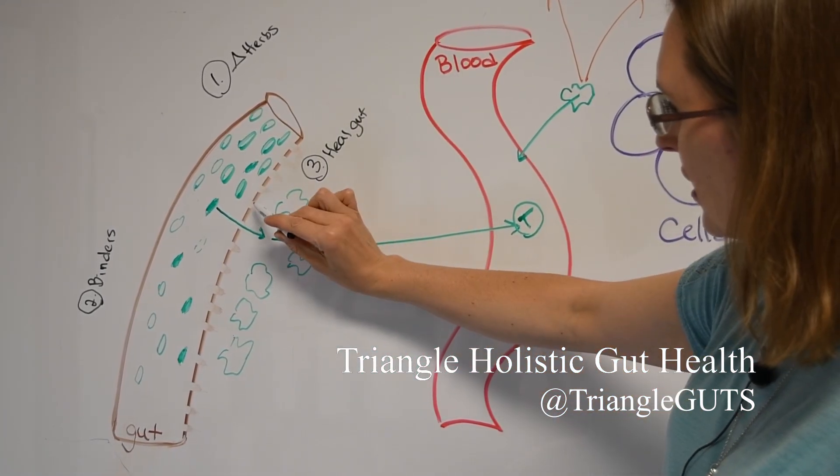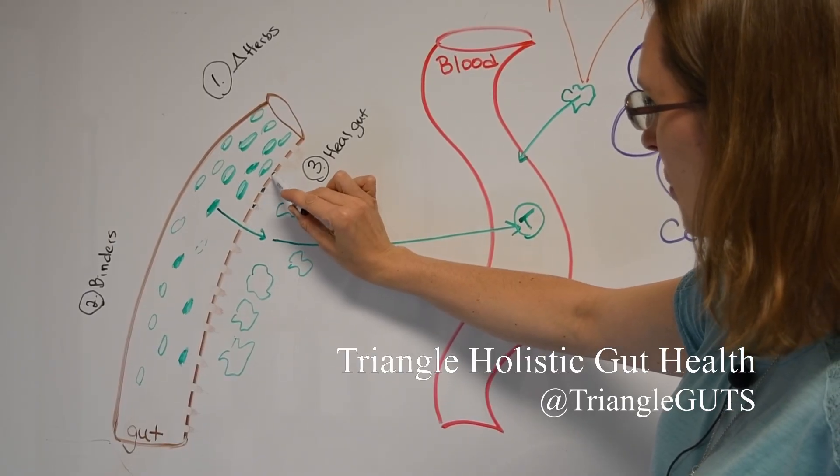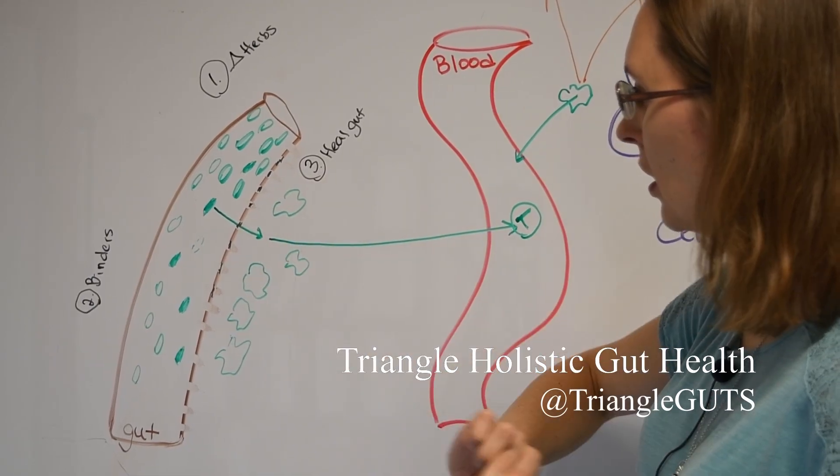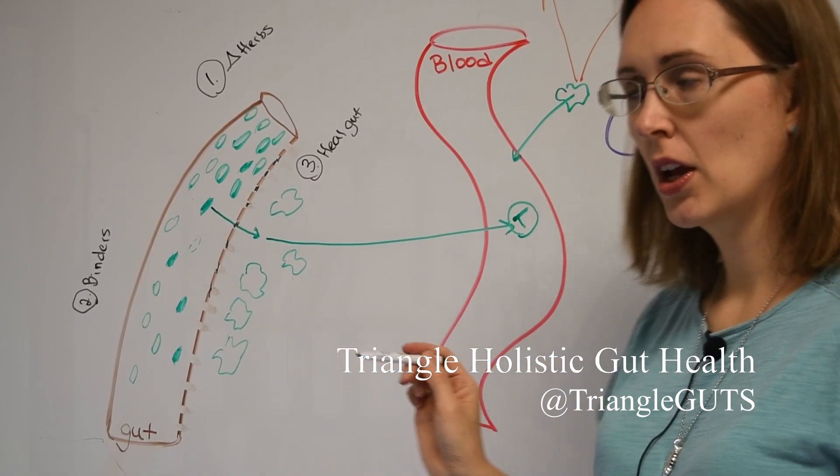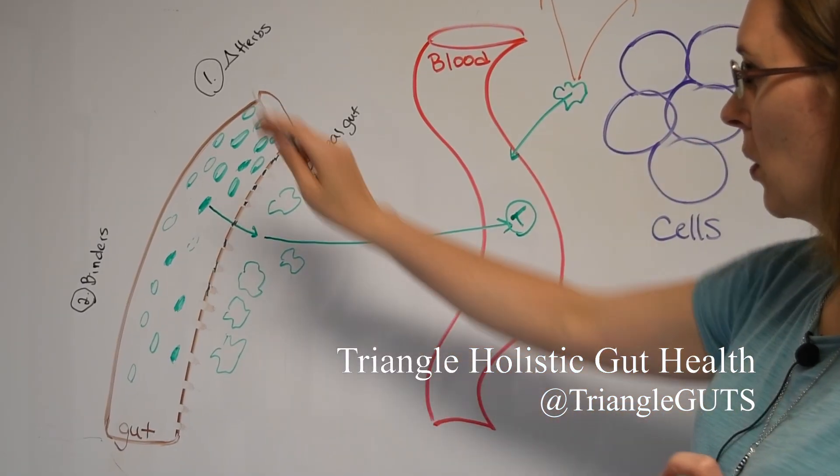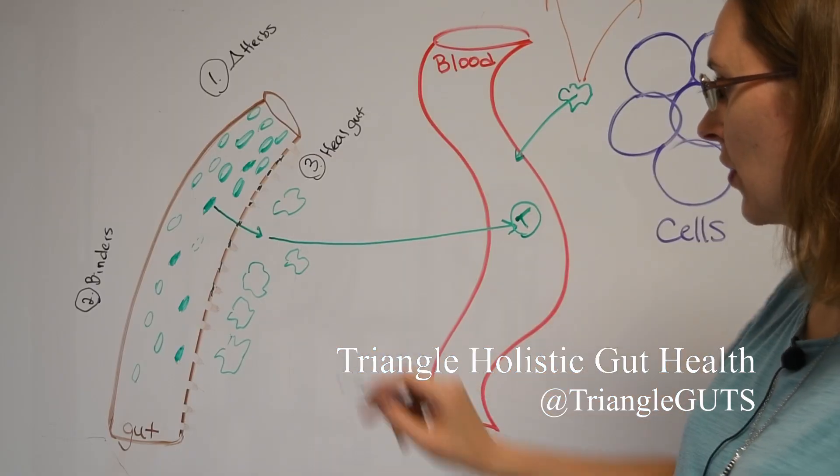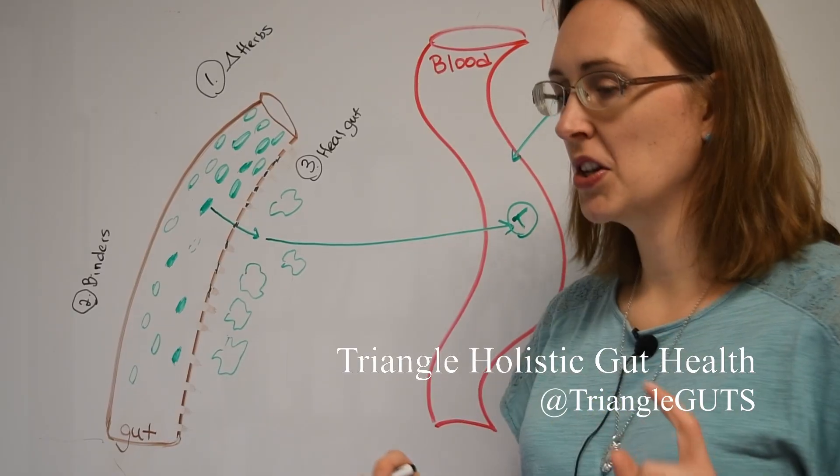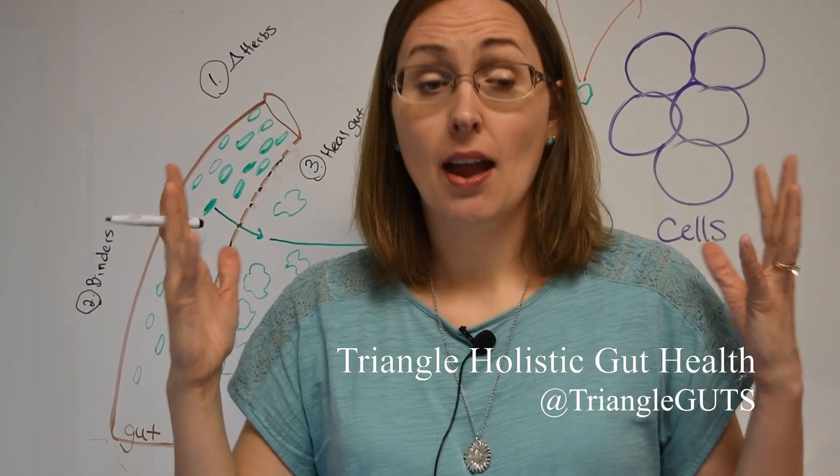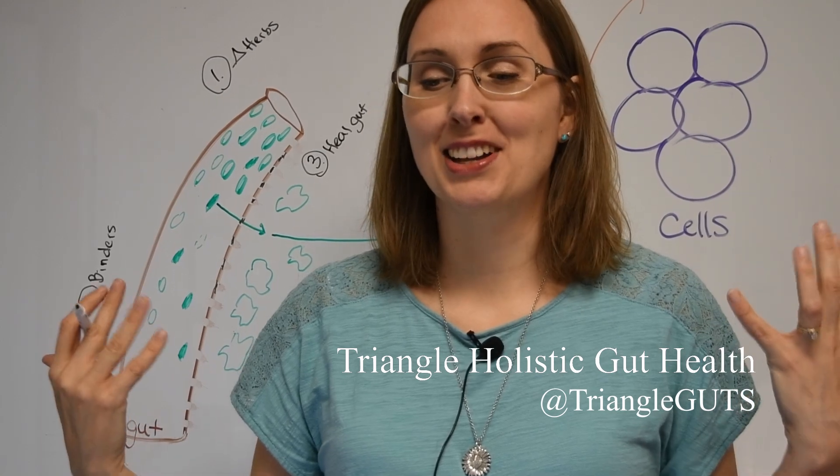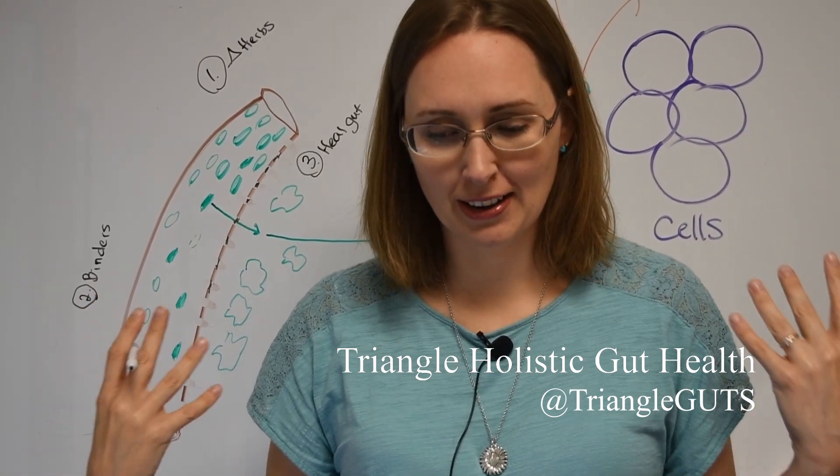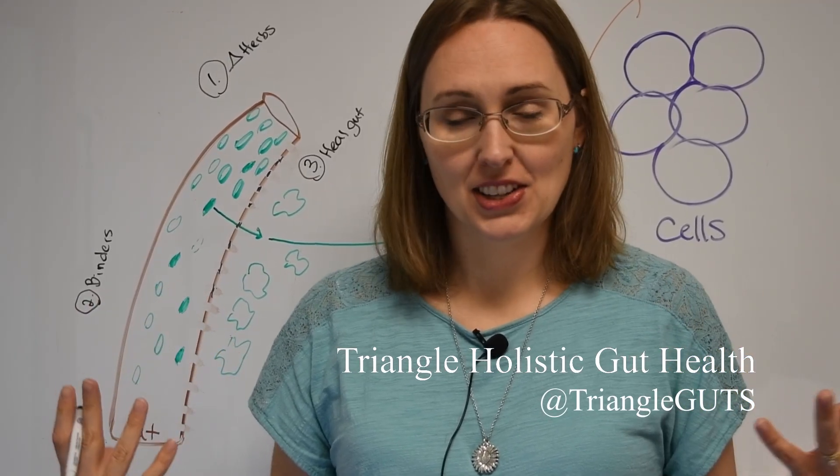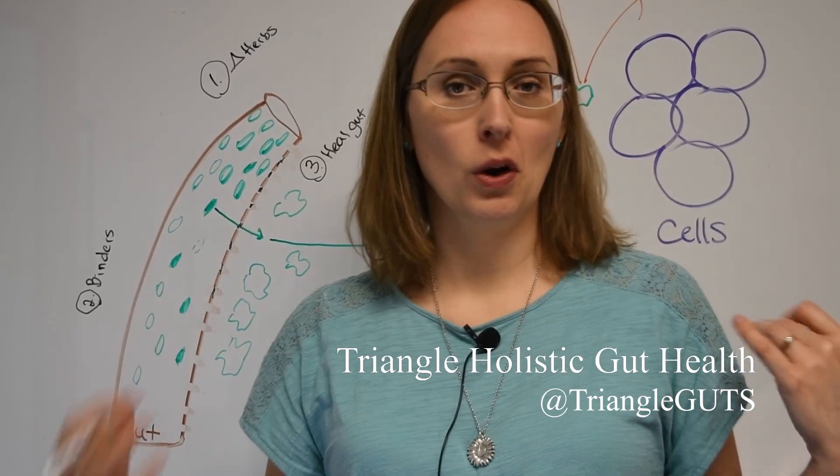So if you heal the lining of the gut and close up these little holes, then the bacterial toxins should not be able to get through. Bada bing bada boom, no more die-off. Here's the third thing, I'm sorry the fourth thing. So one is changing the herbs, two is binders, three is heal your dang leaky gut, easier said than done sometimes. Number four, particularly if you are watching this video right now and you're like, I'm dying, like I am in day two of a die-off reaction, I'm miserable and I don't know what to do and like it's going to take me a couple of days to get the glutamine or get the binders or whatever.